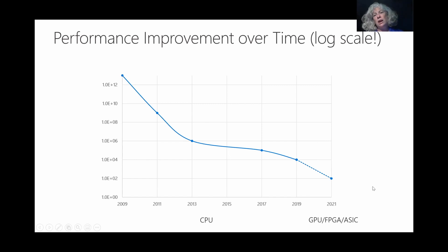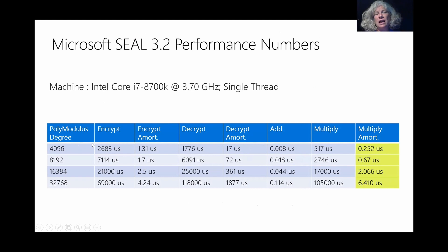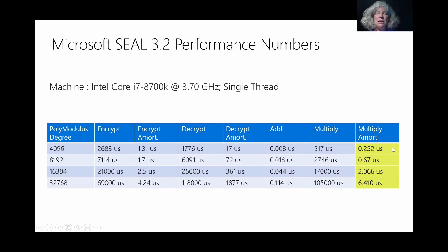We also see the possibility for increased speed through acceleration using specialized hardware such as GPUs or FPGAs — you'll hear more about that in the next talk. Current performance numbers show quite optimistic performance for homomorphic encryption. Looking at the first line of this table, if you use a lattice of dimension around 4096, the amortized time for doing homomorphic multiplication of ciphertexts is about a quarter of a microsecond. That should assure you that the performance time is not too prohibitive to use in practice.